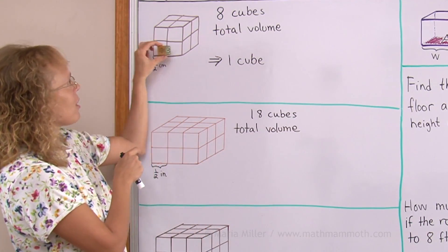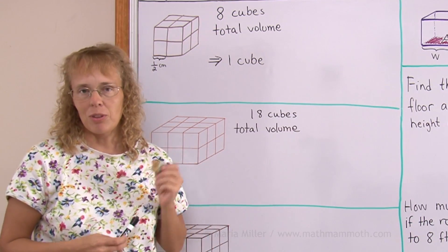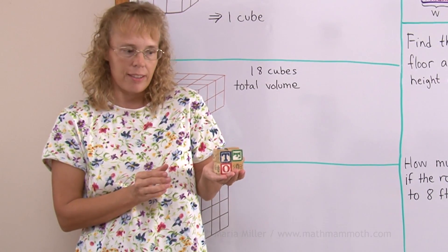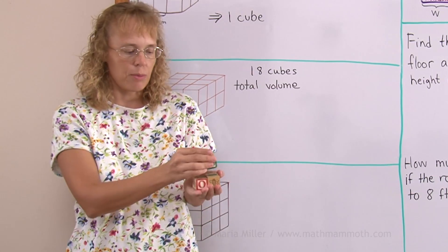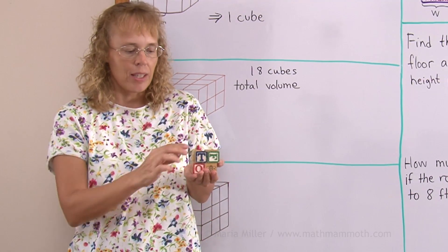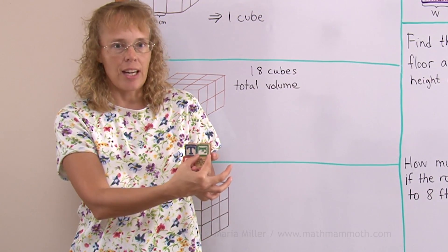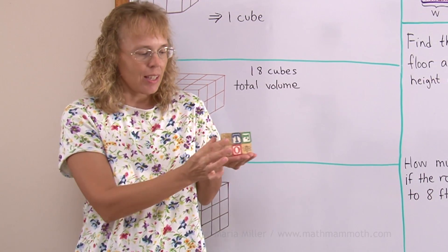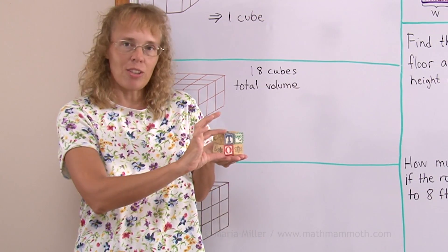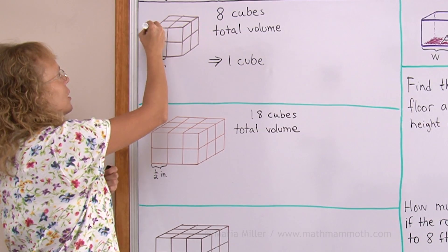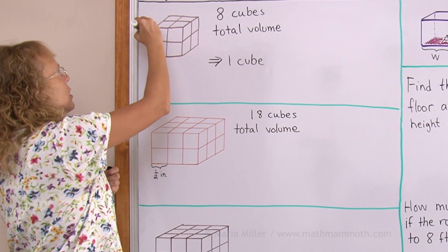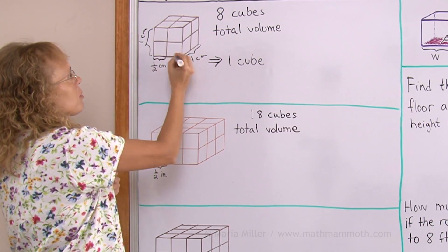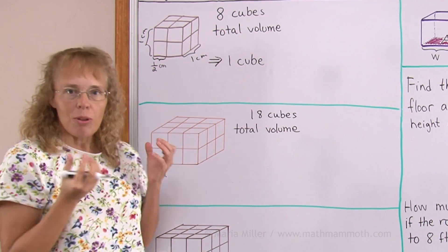We're going to stack those together so that there's four on the bottom and four on the top layer. There's four on the bottom and four here. If this side length is half, then the whole length here is of course one centimetre. This whole length is one centimetre and the height also is one centimetre. So the whole thing has eight cubes.